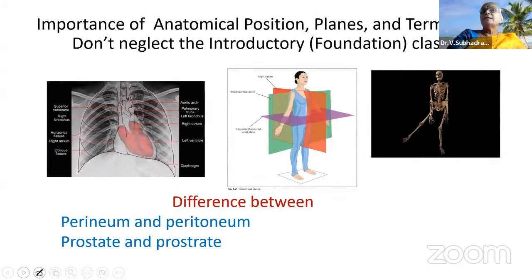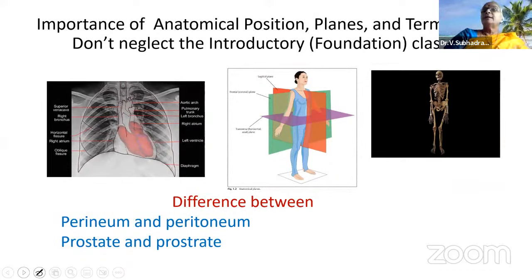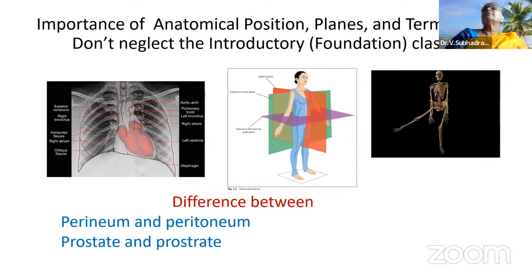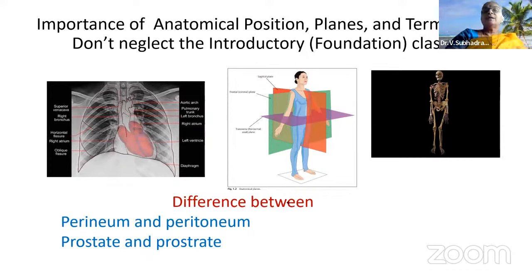In your first anatomy class you learn anatomical position, planes, and terminology — the basic foundations. Many students miss these introductory classes. Anatomical position is needed to describe the apex beat; anatomical planes are needed for sectioning tissues; and planes of movement are needed to describe limb movements. Without these foundations, you cannot give proper explanations.